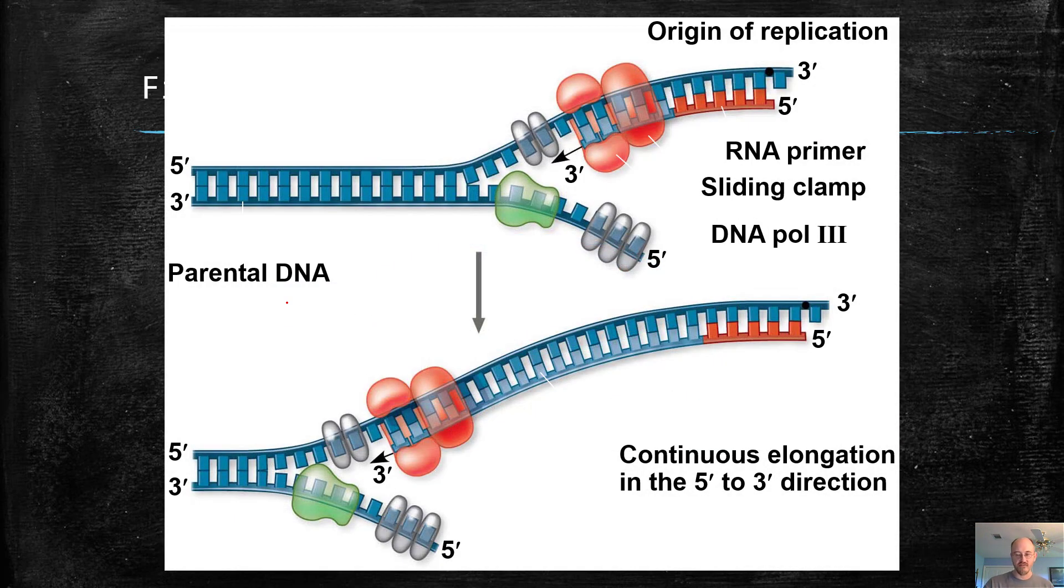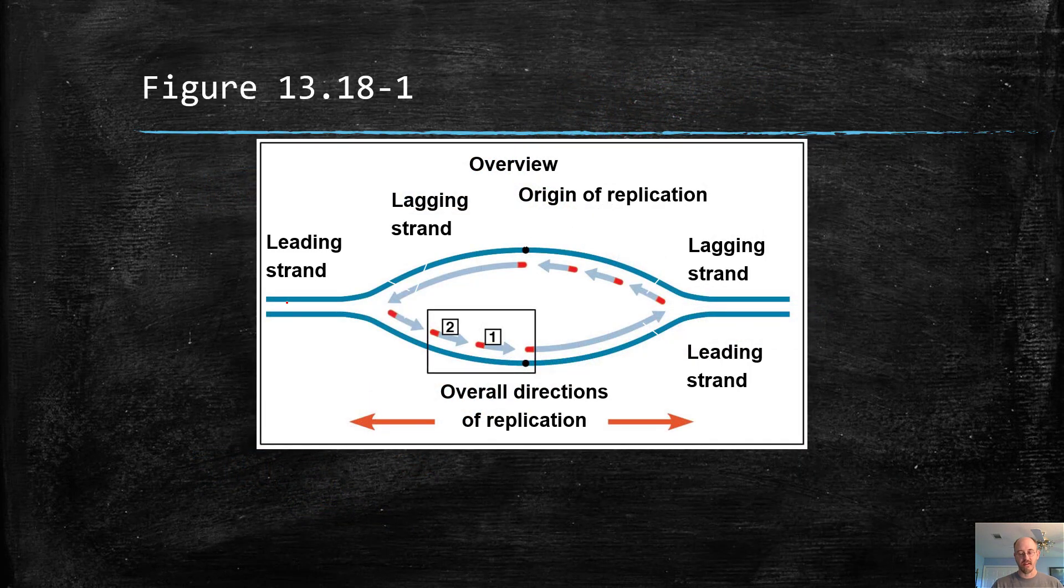So we've seen the leading strand, we've talked about that. But the lagging strand, as I've numbered here, is made in fragments. And these fragments are known as Okazaki fragments. You'll see that in your book. Okazaki fragments. And you'll see it in type spelled directly in a moment.